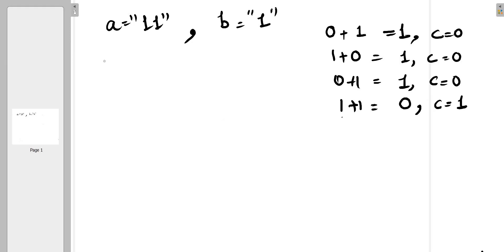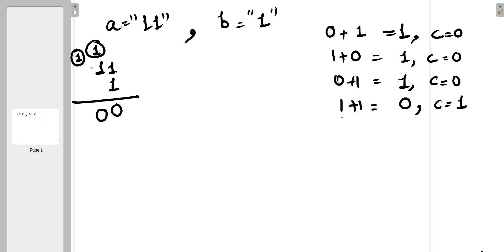In our example we have to sum '11' and '1'. One plus one is zero with a carry of one. Again one plus one is zero with a carry of one, so we get '00'. Then we append the remaining carry of one, giving us '100' as the sum.